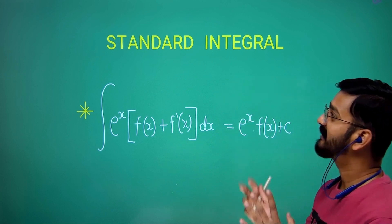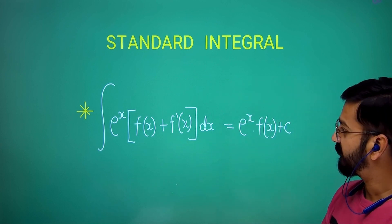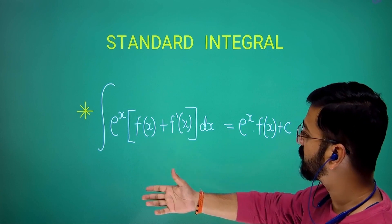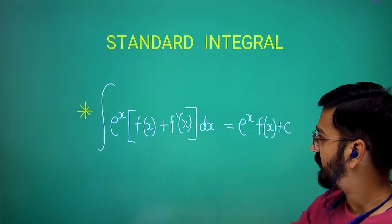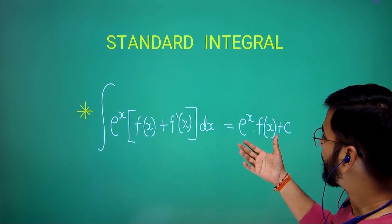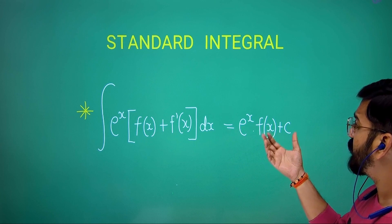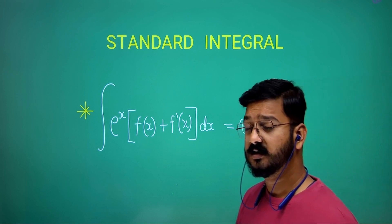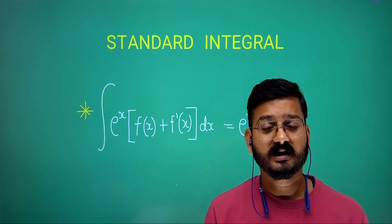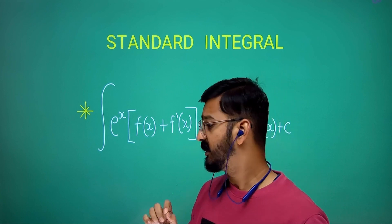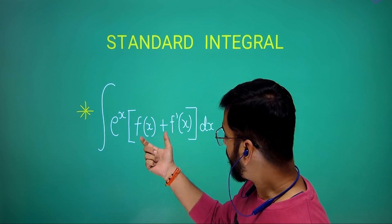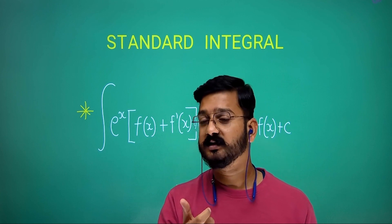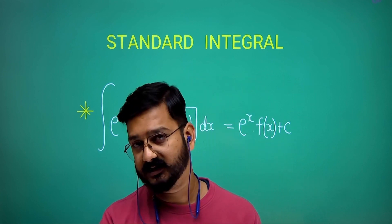Today's topic is a standard integral of this form: e to the power x multiplied by f(x) plus f'(x). You can directly write this as e to the power x times your original function plus the integration constant. The most important part is identifying which of the two functions is the original function and which is the derivative of that.